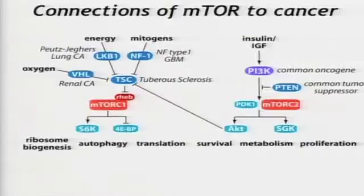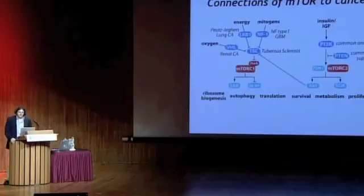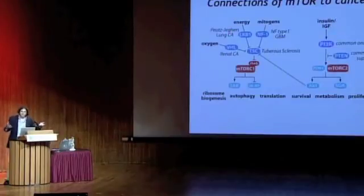Both of these complexes are intimately connected to cancer. In the case of mTORC1, there are many mutations first discovered in cancer-prone syndromes and increasingly being found in common cancers through cancer genome sequencing. mTORC1 is surrounded by tumor suppressors and oncogenes. mTORC2 is part of the PI3 kinase pathway, therefore part of one of the most commonly mutated pathways in cancer.